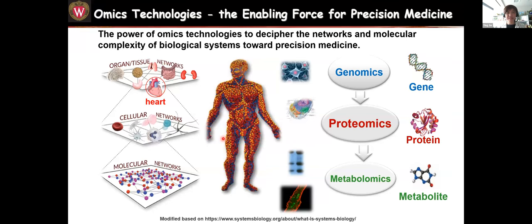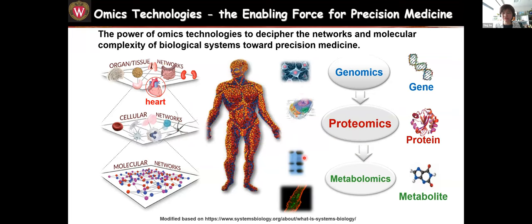Omics technology is really the enabling force for precision medicine. The power of omics technologies can be used to decipher the networks and molecular complexity of biological systems towards precision medicine — at the molecular level, cellular level, and organ level. Our lab focuses on proteomics, and we've started to do some metabolomics, but overall we want to integrate proteomics with metabolomics and with biochemical and physiological functions.